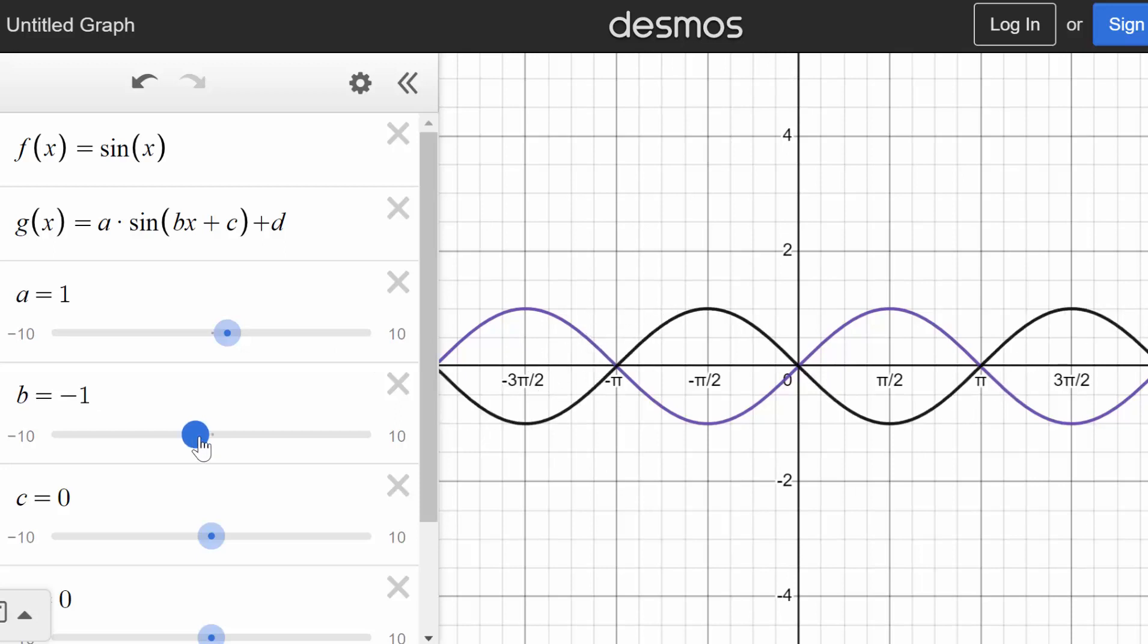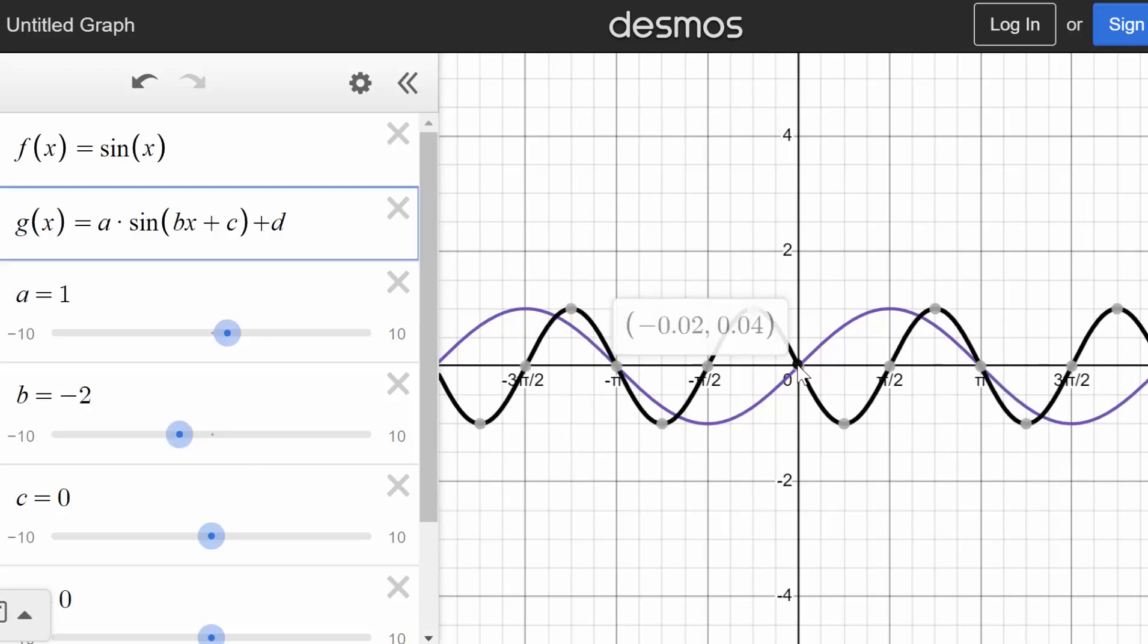So we can see when b is negative 1, it actually has the exact same period as our parent function, but we now have a reflection. But that reflection doesn't actually affect the period. So notice when b is negative 2, the period of this function still goes from 0 to pi, just like when b was positive 2.